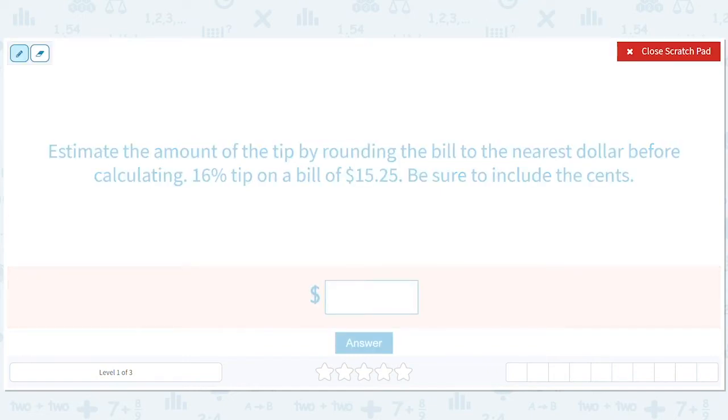16% tip on a bill of $15.25. Okay, so the instructions are round the bill to the nearest dollar, so $15. And in real life, you'd probably even round this tip, right, because 16% is a complicated tip to give. So, here's $15 and you want to do a 16% tip. So you do 15 and you multiply by 0.16. Because to get a percent, you move the decimal over 2 to make it a decimal.